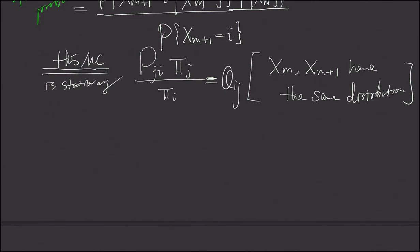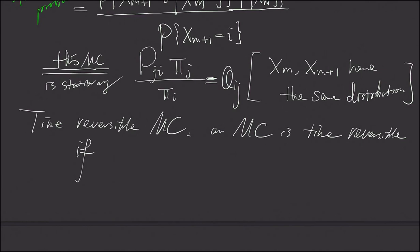Now we have our definition for a time reversible Markov chain. We say a Markov chain is time reversible if Q_ij is P_ij.